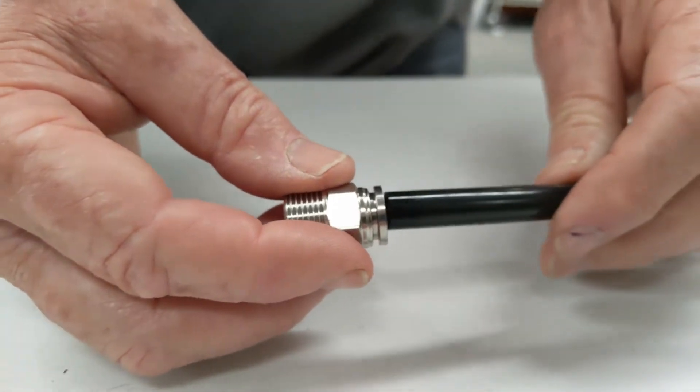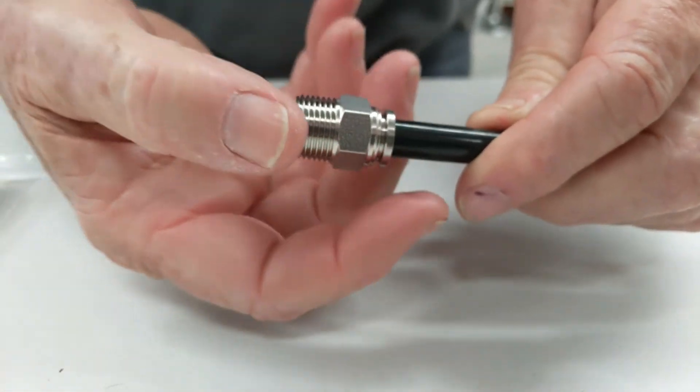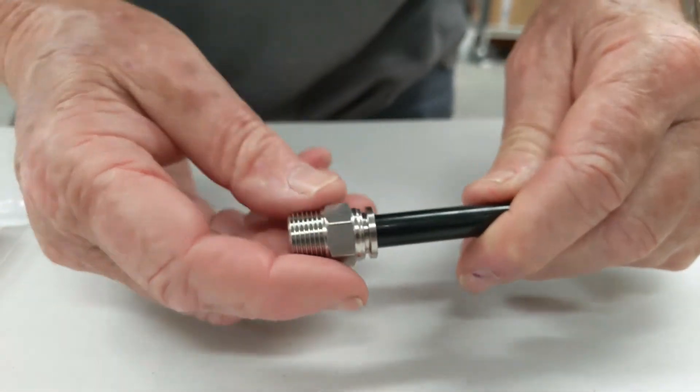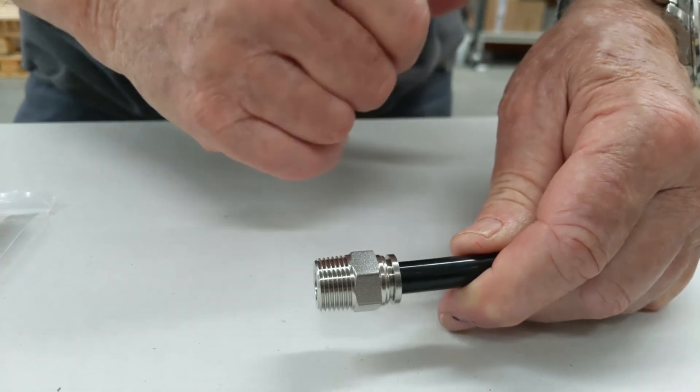In this case, the OD tube pushes in like that. To release it, you've got to pull the collet back and it pulls out. So when it goes in, the O-ring pushes into place and locks around the tube, giving the seal.